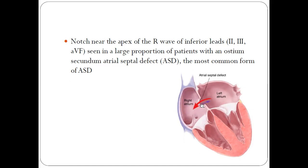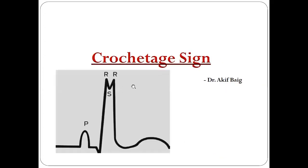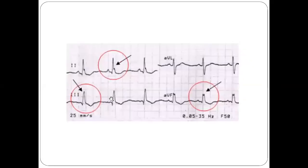Ostium secundum ASD is the most common form of ASD. In these patients, generally based on the degree — the larger the defect or the larger the shunt — you can see notching in the inferior leads, that is leads 2, 3, and aVF. You can see an extra notch on the R wave, and that is what is called the Crochetage sign.